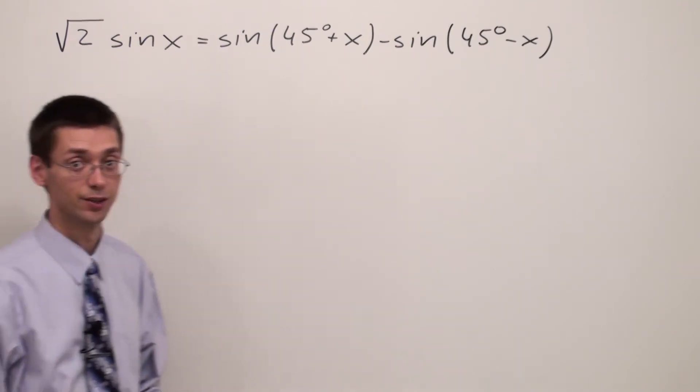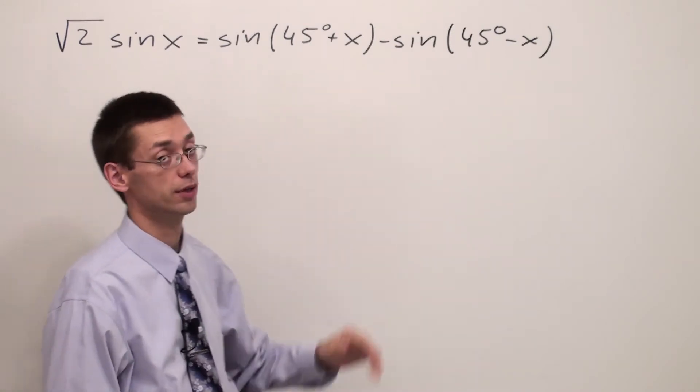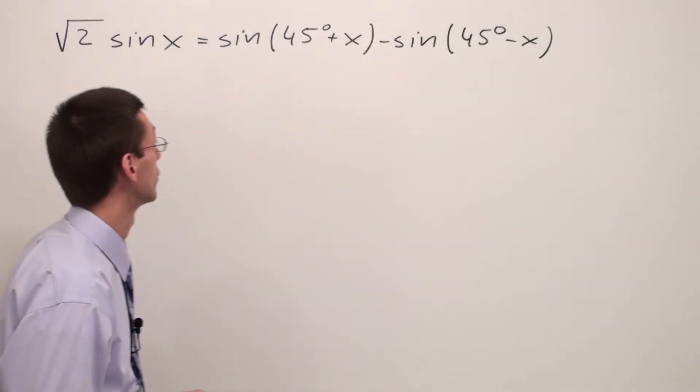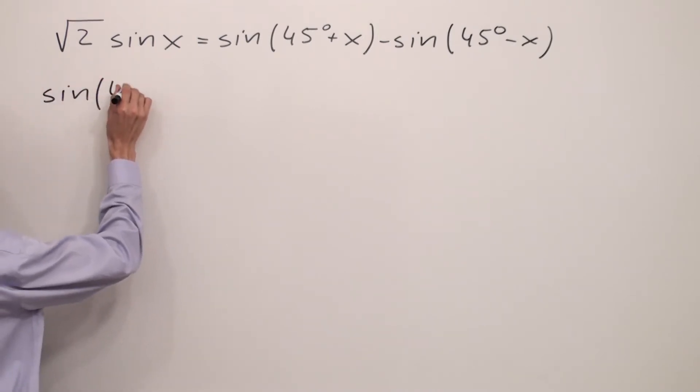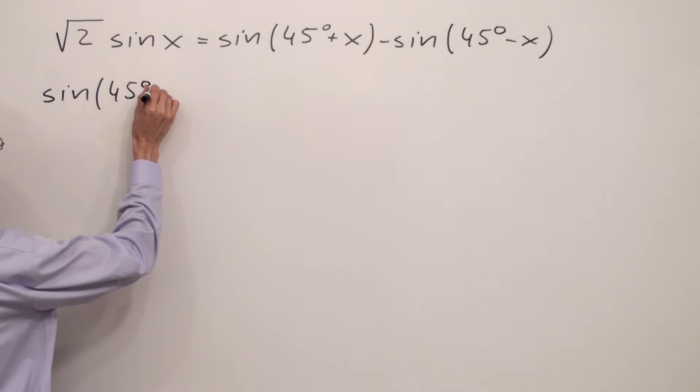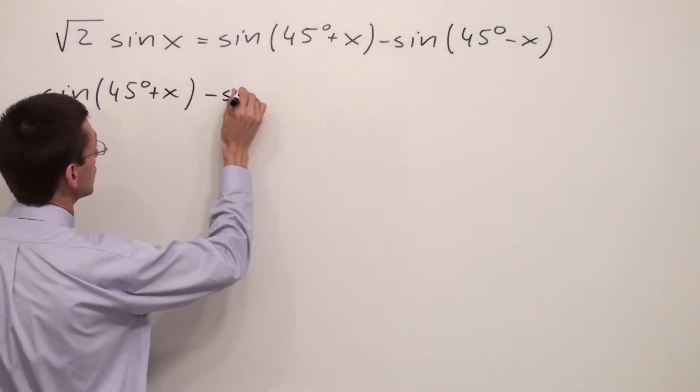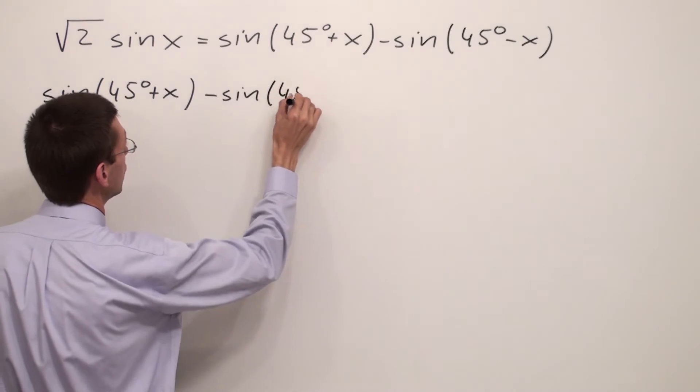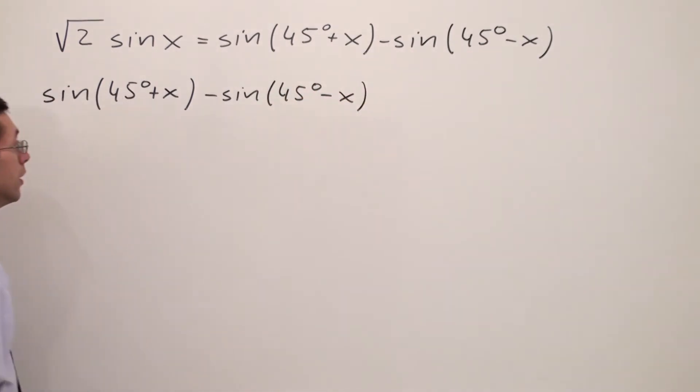Let's take a look at this identity. We're going to start our proof from the right side this time. Let me copy down the right side: I have sine of (45° + x) minus sine of (45° - x). Please notice that we have nothing else, just the sine of the sum of two angles and sine of the difference of two angles.